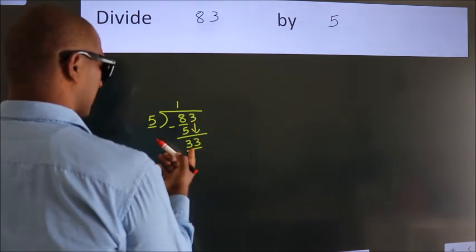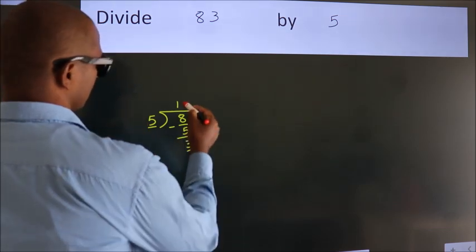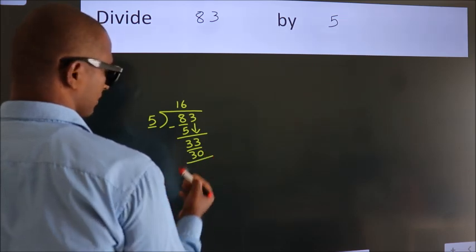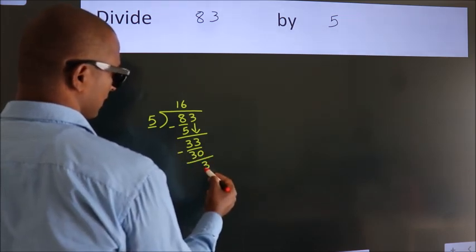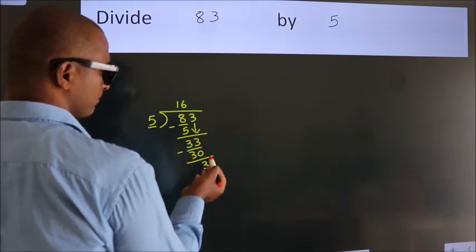So 33. A number close to 33 in 5 table is 5, 6, 30. Now we subtract. We get 3. After this, no more numbers to bring it down.